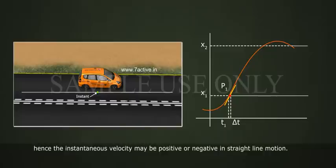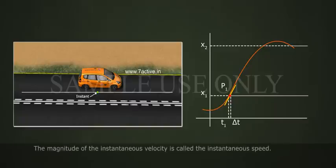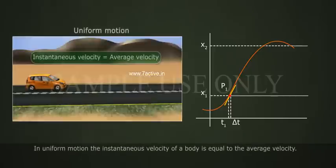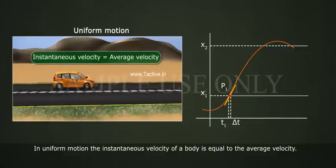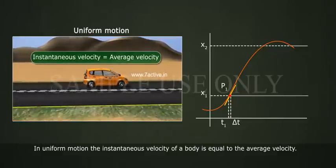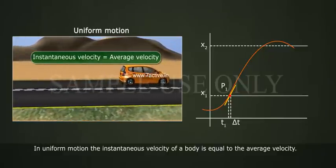Hence, the instantaneous velocity may be positive or negative in straight line motion. The magnitude of the instantaneous velocity is called the instantaneous speed. In uniform motion, the instantaneous velocity of a body is equal to the average velocity.